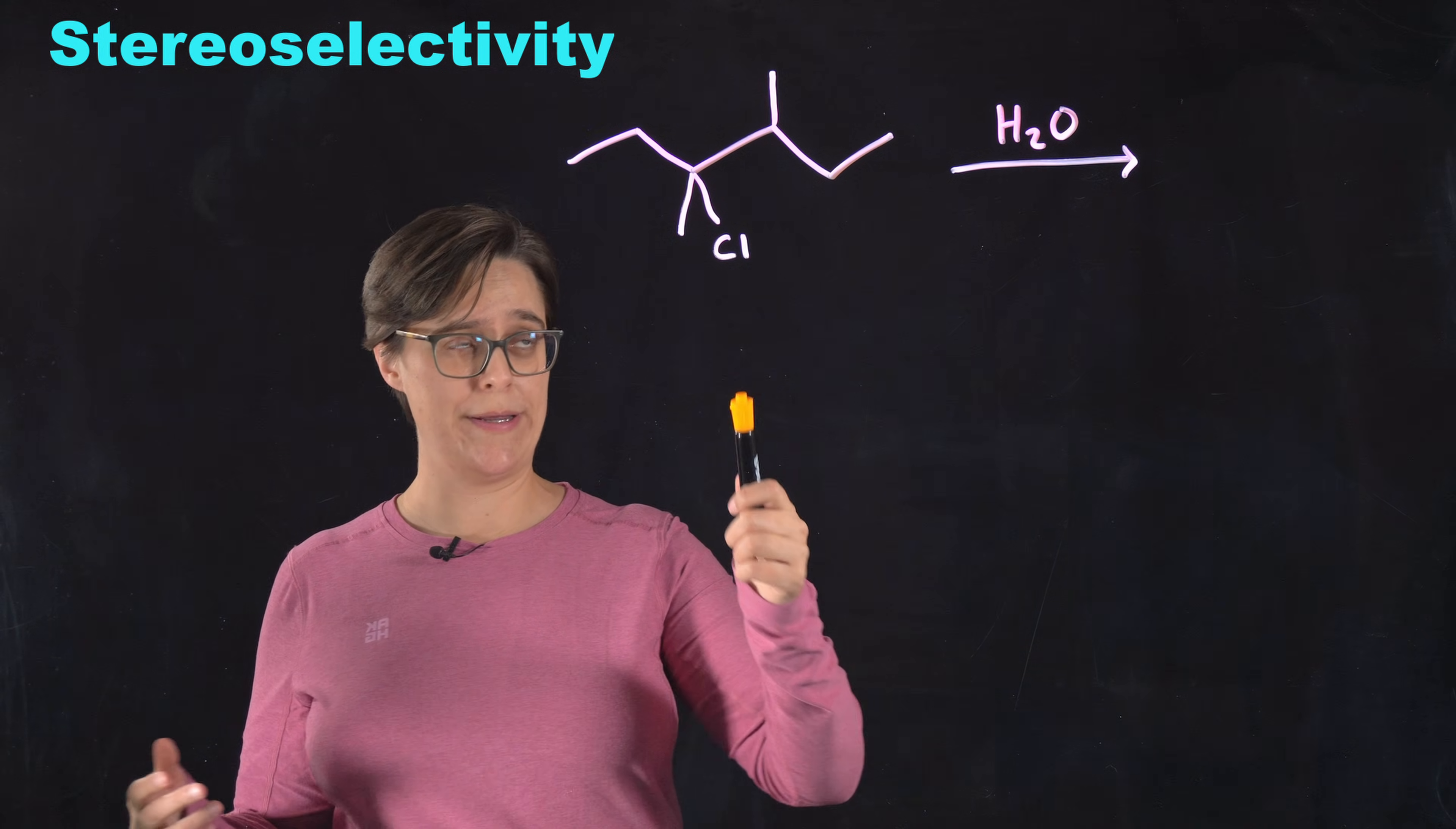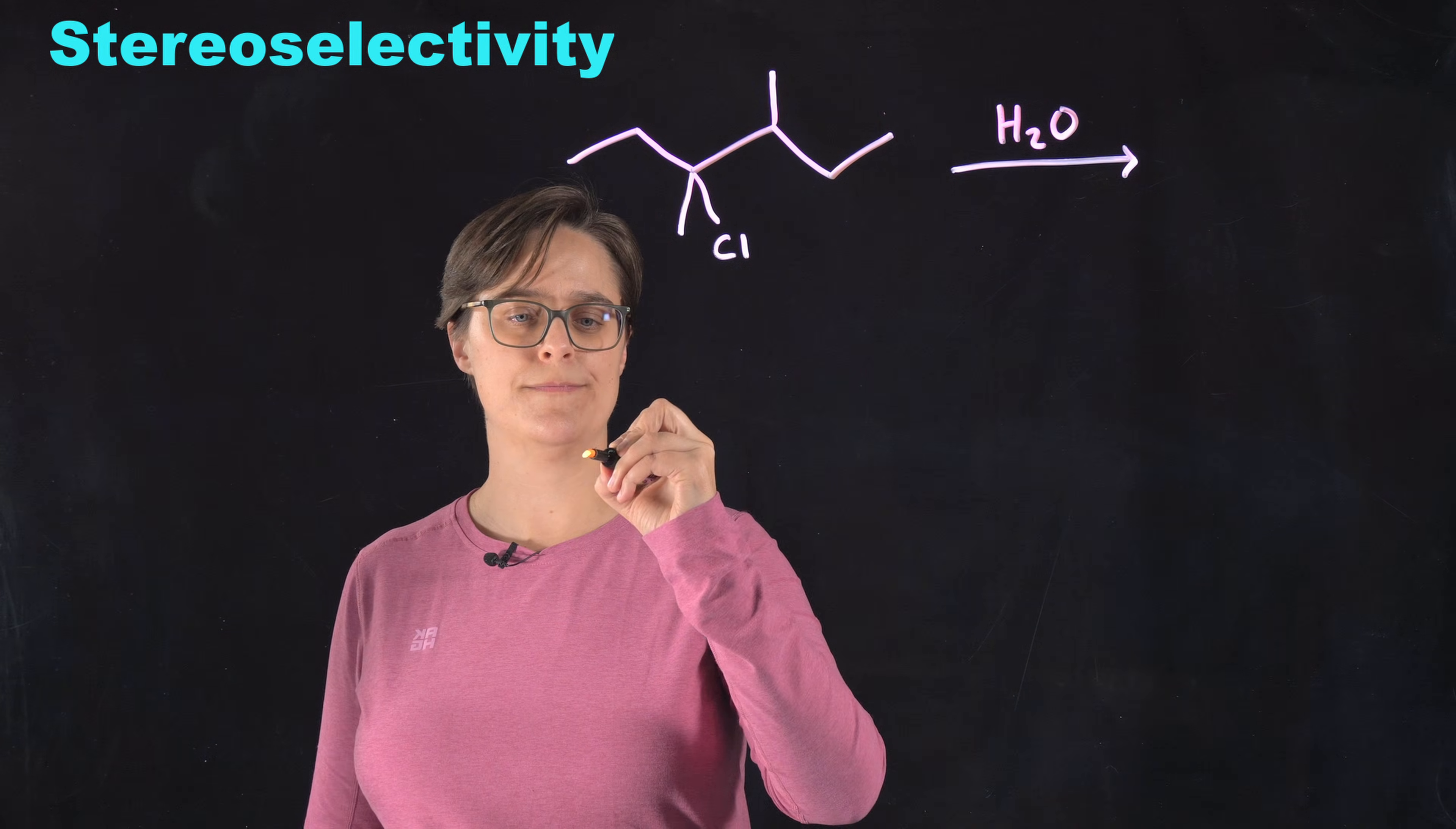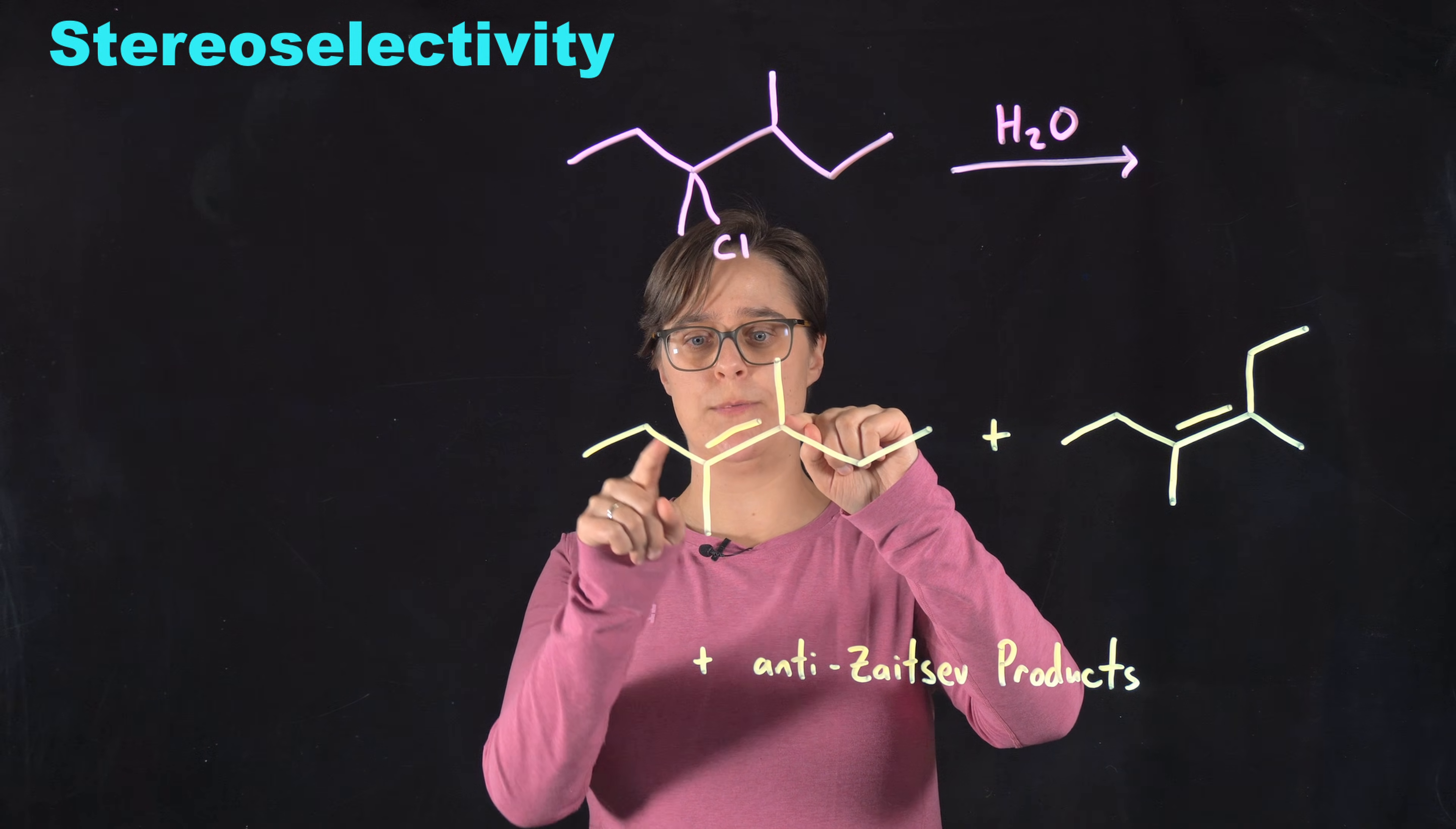So our examples keep getting more complex. The goal with this problem is to predict the major product. And the starting point is Zaitsev's rule. Zaitsev's rule works here. But the problem that we come up with is that there is a pair of stereoisomers, and only one of them is the major product. So we know that the double bond is going to be between these two carbons according to Zaitsev's rule. Total number of other carbons bonded to these two carbons is one, two, three, four.